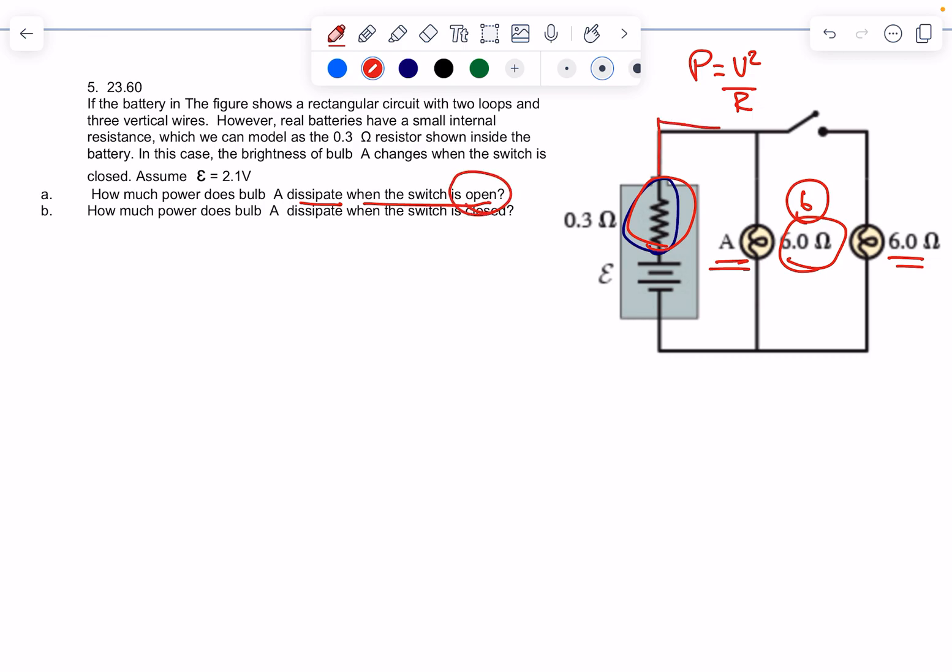But what's the voltage? When the switch is open we have a series circuit, right? And so the total resistance is equal to 6.3 ohms.